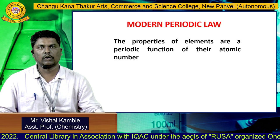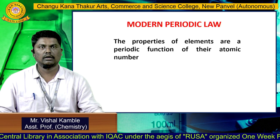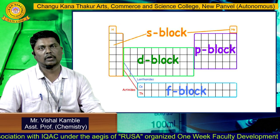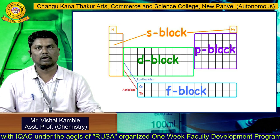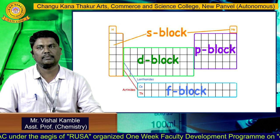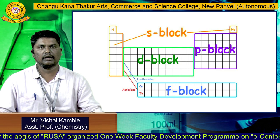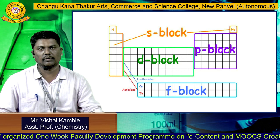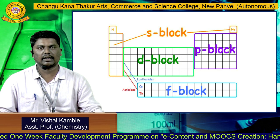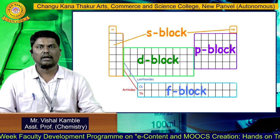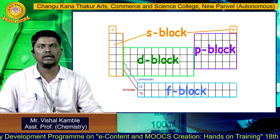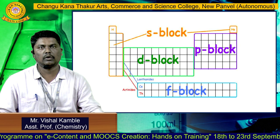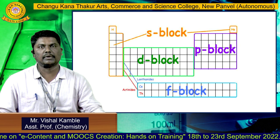The difference between Mendeleev's and modern periodic law is that atomic weight is replaced by atomic number. The periodic table has four blocks: s-block, p-block, d-block, and f-block elements. In our periodic table, about 118 elements are present, and as per the electronic configuration of each element, we classify them into these four blocks.